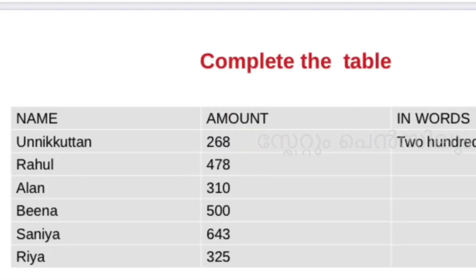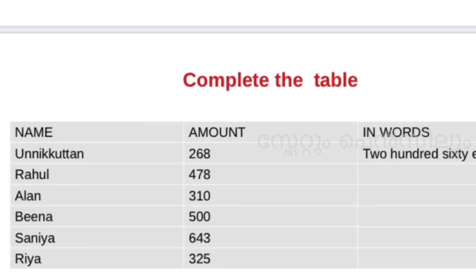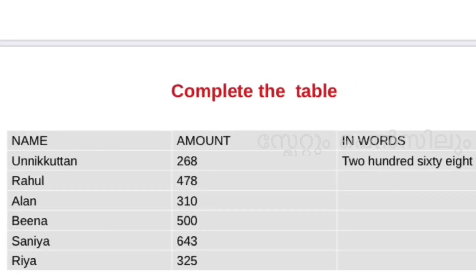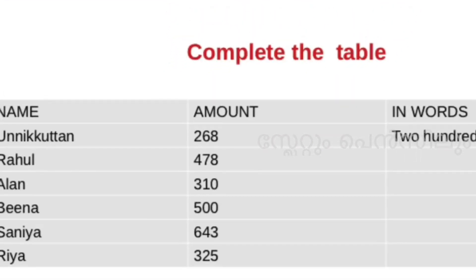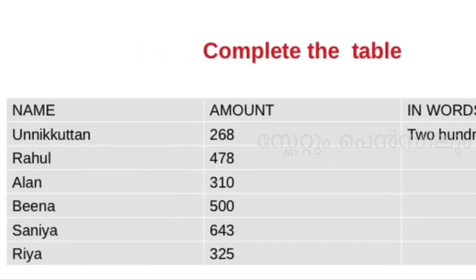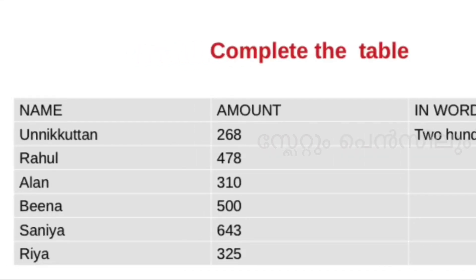Next is complete the table. In the table there is a name and an amount — write the name in words, not in figures. The first entry is 268. Next, Rahul is 478, written in words as 468.